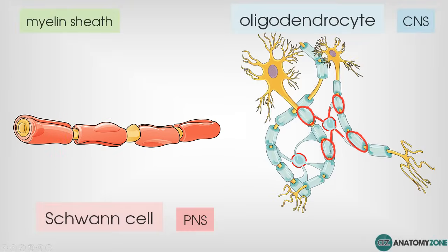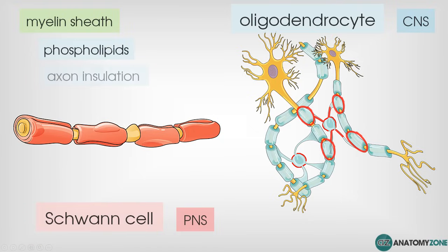So what is myelin? It's a fatty, lipid-rich substance. The fat in the myelin is made from the phospholipids of the cell membrane of Schwann cells and oligodendrocytes. The purpose of myelin is to insulate the axon and prevent the electrical signal — the action potential — from escaping from the neuron. As well as providing this insulating property, it also increases the speed of electrical impulse down the neuron.